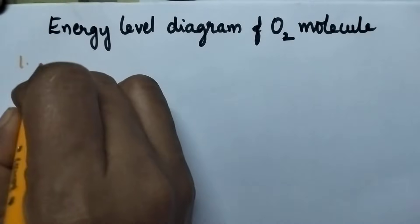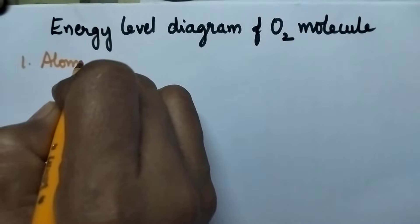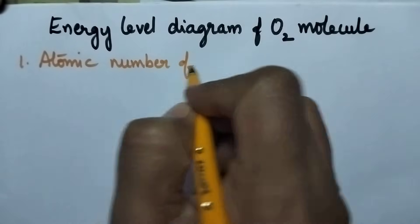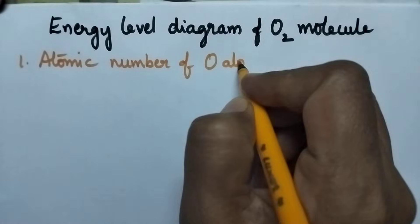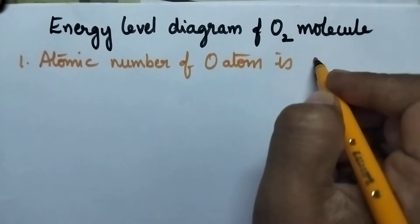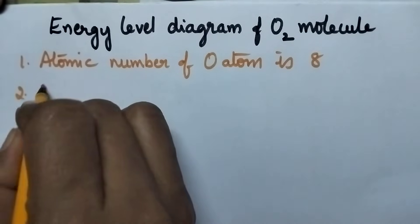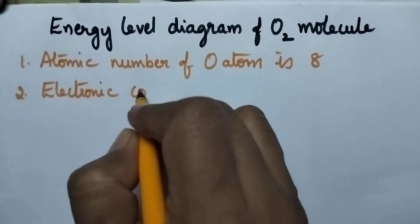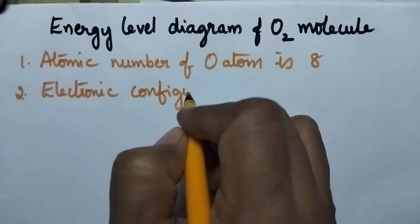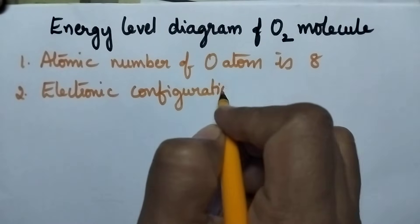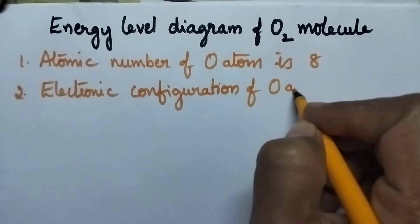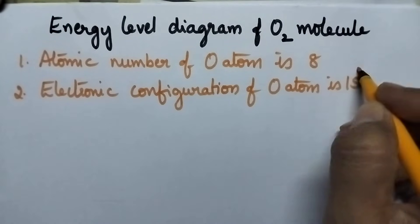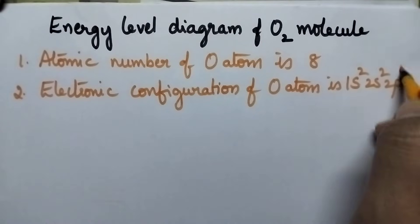The atomic number of oxygen atom is 8, and its electronic configuration is 1s², 2s², 2p⁴.